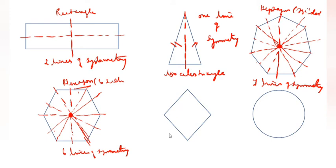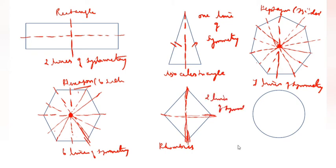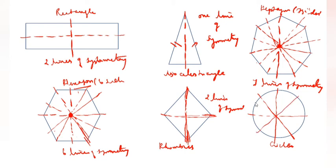This is a rhombus. Rhombus has only 2 lines of symmetry: center 1 and this is 2 — both come to the center. This is 2 lines of symmetry. This is a circle. Circle has an infinite number of lines of symmetry — this way, this way, this way, this way, this way, this way — it goes on. So, infinite lines of symmetry.